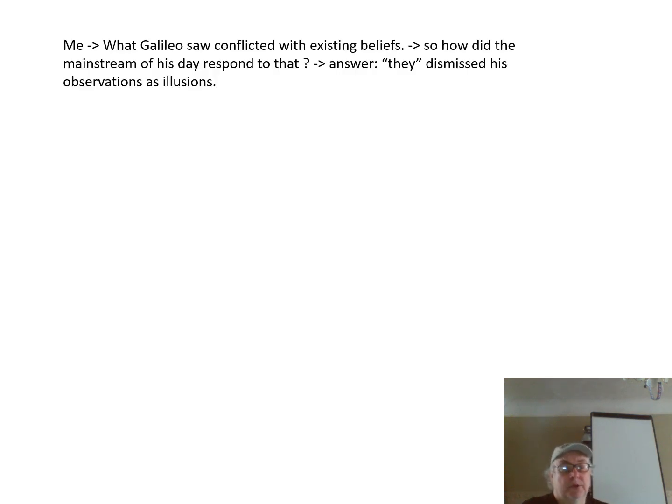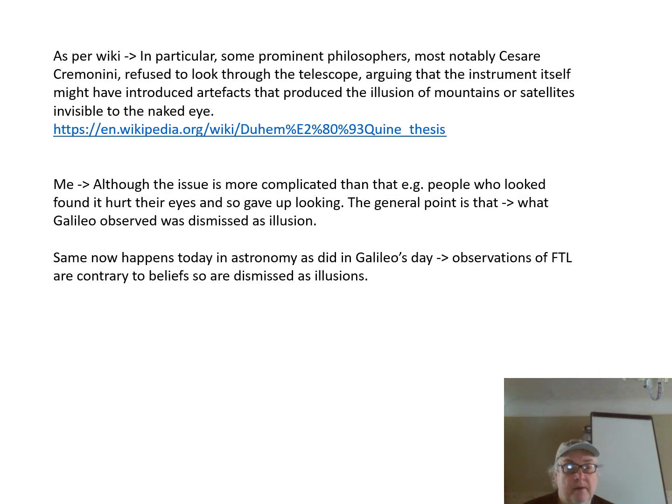So this is Galileo and the first time a telescope was used in astronomy, what I'm aware of. So what Galileo saw conflicted with the existing beliefs of his time. So how did the mainstream of his day respond to that? And the answer to that is they dismissed his observations as illusions. I got this quote from Wikipedia saying about that, but really the issue was more complicated than that. People who looked in his telescope found it hurt their eyes and so gave up looking. But the general point is what Galileo observed was dismissed as illusion.